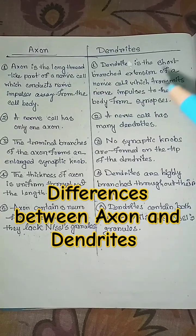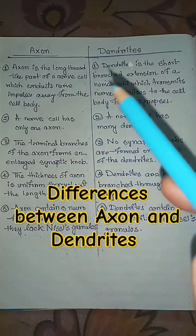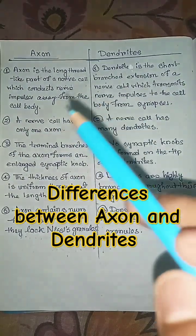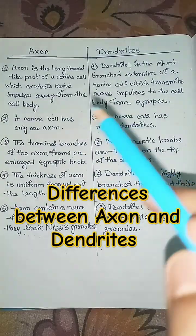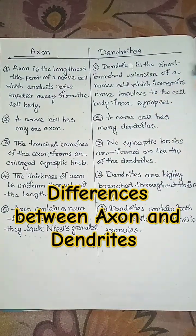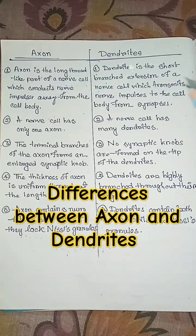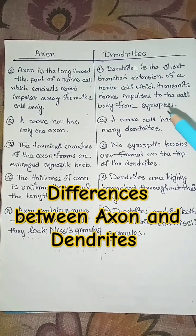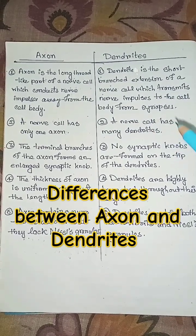Differences between axon and dendrites. Axon is the long thread-like part of a nerve cell which conducts nerve impulses away from the cell body. Dendrites is the short branched extension of a nerve cell which transmits nerve impulses to the cell body from synapses.